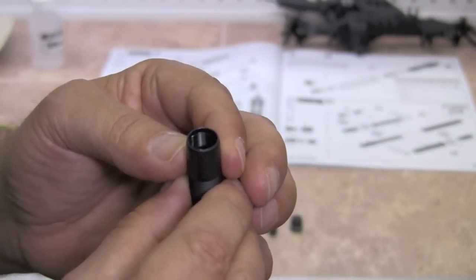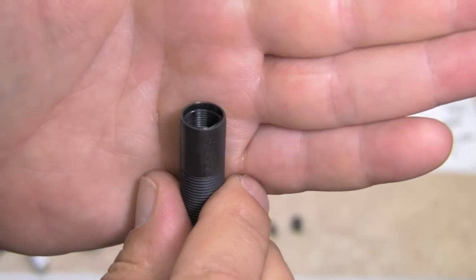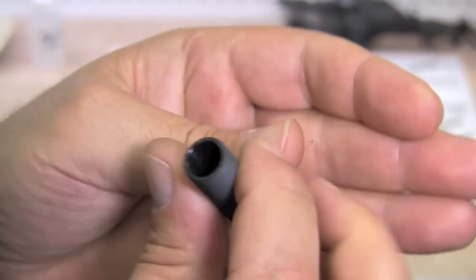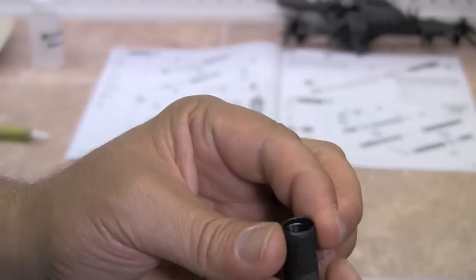And if you look on the inside, one end is threaded, which you can see there. That's the threaded end, the bottom, and the top is not threaded. Okay.